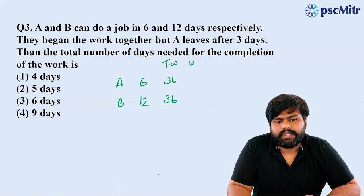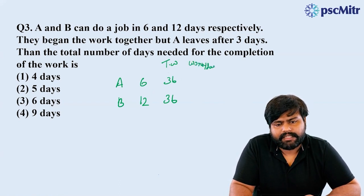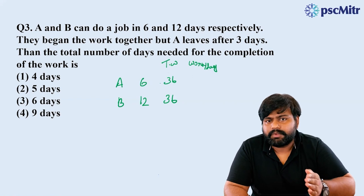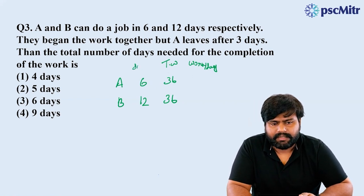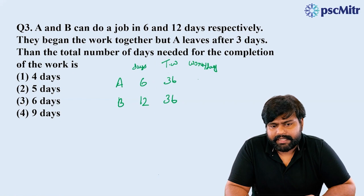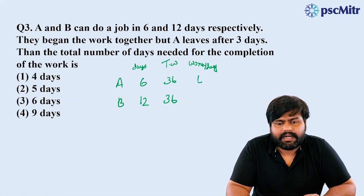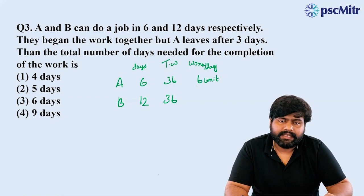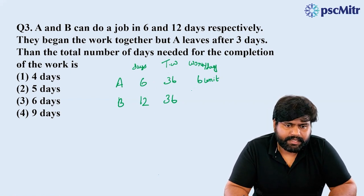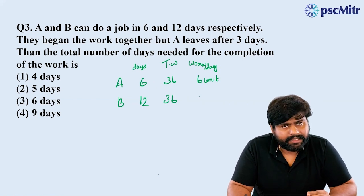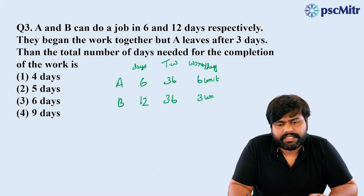Let's go into a thousand units. A: one thousand units is 36 divided by 6, and 36 units of work. One thousand units is 36 divided by 6 units. Twelve thousand units is 36 divided by 36 units. 53 divided by 12 gives 3 units.